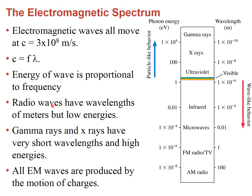Radio waves have very long wavelengths but very small frequencies and very small energies. Gamma rays, on the other hand, have very high energies and consequently very short wavelengths. All electromagnetic waves are produced by the motion of charges. The wavelength goes from hundreds of meters for radio waves all the way to 10⁻¹⁰ meters for the most energetic electromagnetic waves, which are the gamma rays.